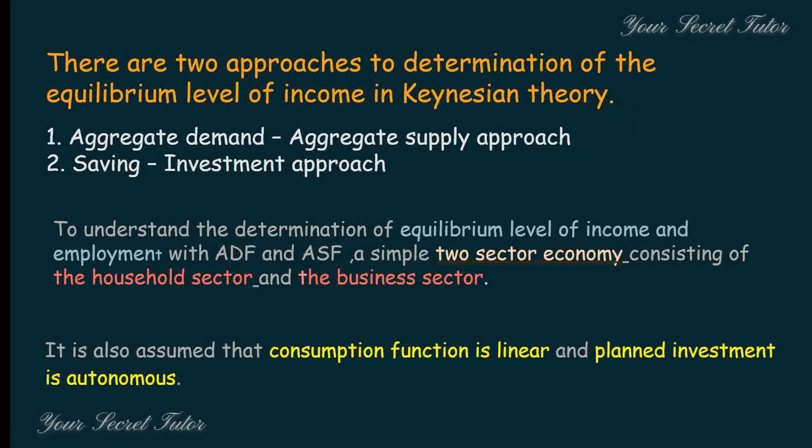Planned investment is autonomous — that is, irrespective of any income or revenue, there is a certain fixed amount of investment. This means the investment curve is going to be parallel to the x-axis.